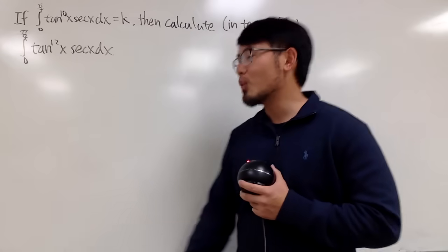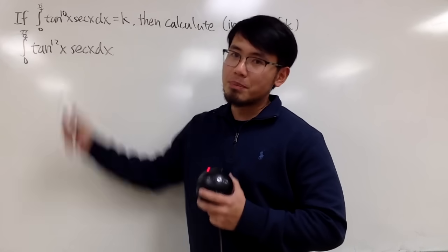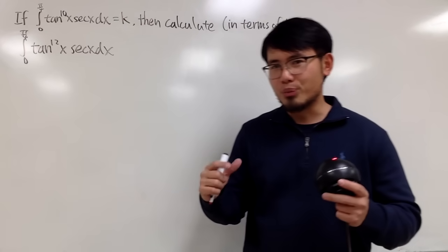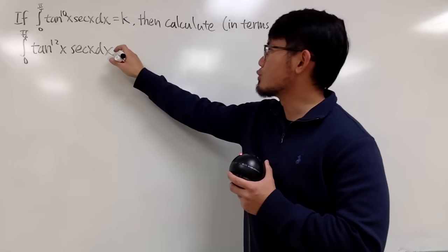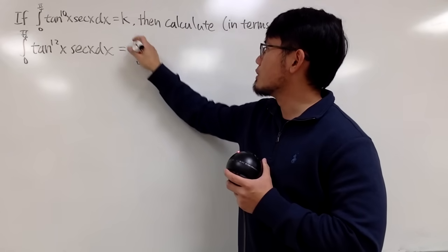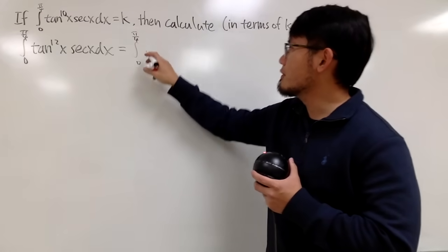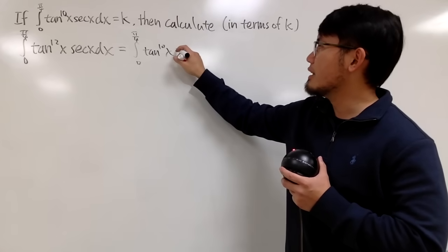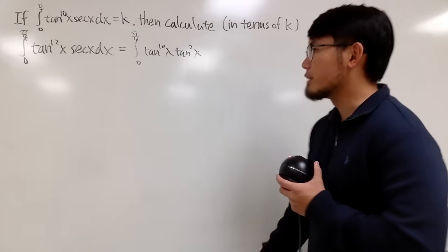Let's see what we are going to do with this. This is the twelfth power, this is the tenth power, so perhaps we should break the powers apart. So the integral from 0 to pi over 4, for the twelfth, I will just write it as tangent to the tenth power x, and then tangent to the second power. So this is still the twelfth power of tangent, and then we have the secant x right here.